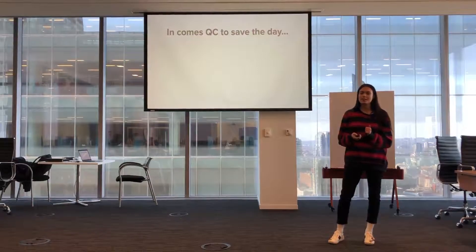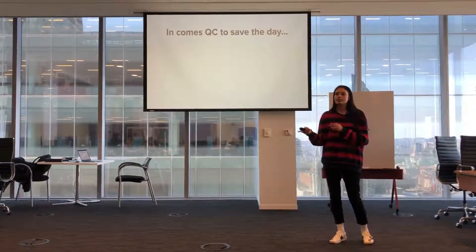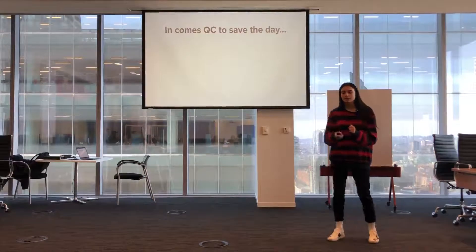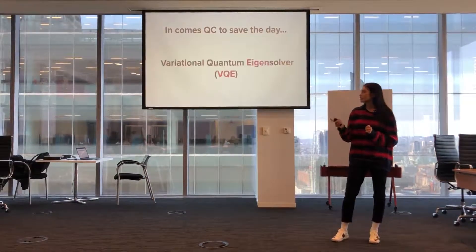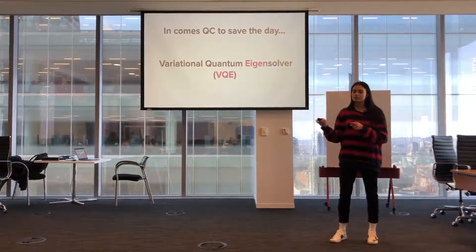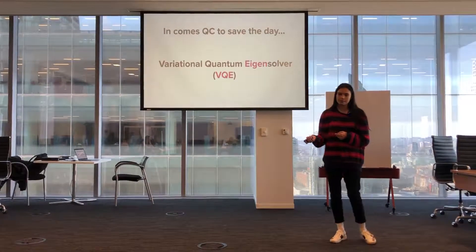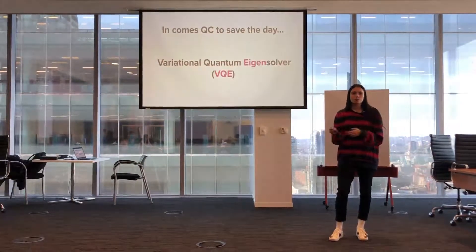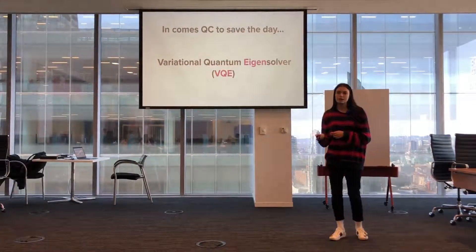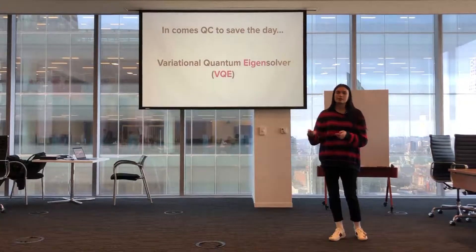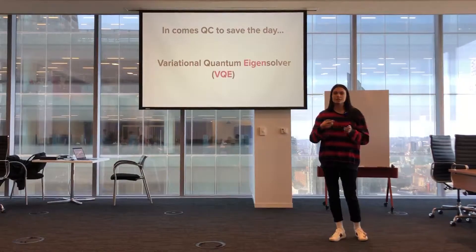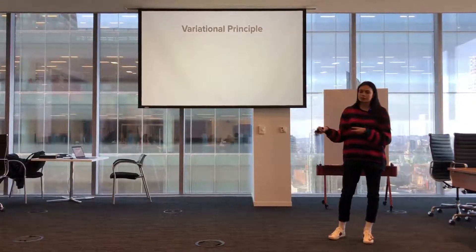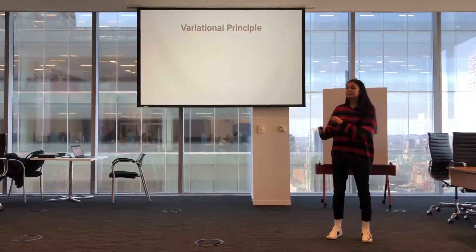This is where quantum computing comes in, because not only are quantum computers really good at simulating quantum physics, they're also really good at finding the lowest possible eigenvalue of some matrix. They do this using the Variational Quantum Eigensolver, or VQE for short. VQE is a hybrid classical-quantum machine learning algorithm that approximates the ground state energy of some molecule.